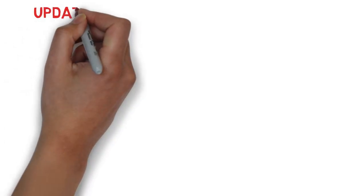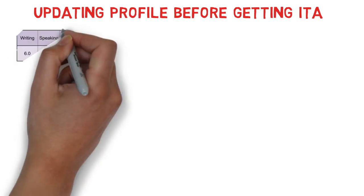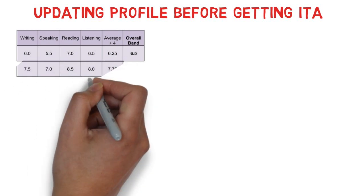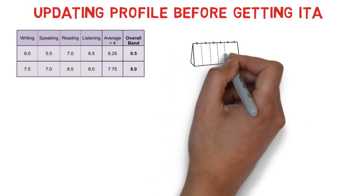Let's talk about updating the profile before getting the ITA. One very common case is: let's say you appeared for IELTS once, you didn't get CLB 9, but you were able to create an Express Entry profile. Once you do get CLB 9 or a better band, you should go back and update your Express Entry profile. Yes, you can definitely go and update your profile with whatever information you think is correct.